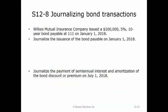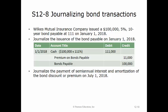Wilkes Mutual Insurance Company issued a $100,000, 5%, ten-year bond payable at $111 on January 1st, 2018. To record the issuance, we debit cash for $111,000, equal to $100,000 times 111%. We credit premium on bonds payable for $11,000, the difference between the face amount of $100,000 and the cash received of $111,000, and credit bonds payable for the $100,000 face amount.